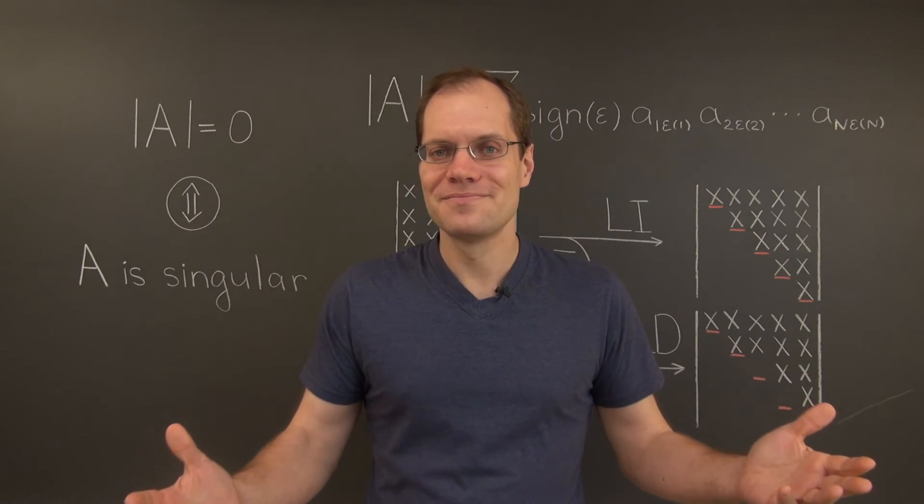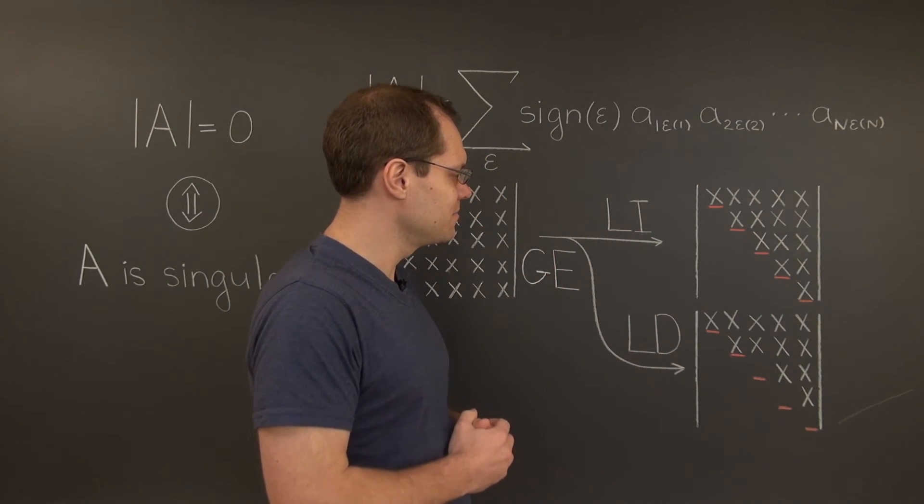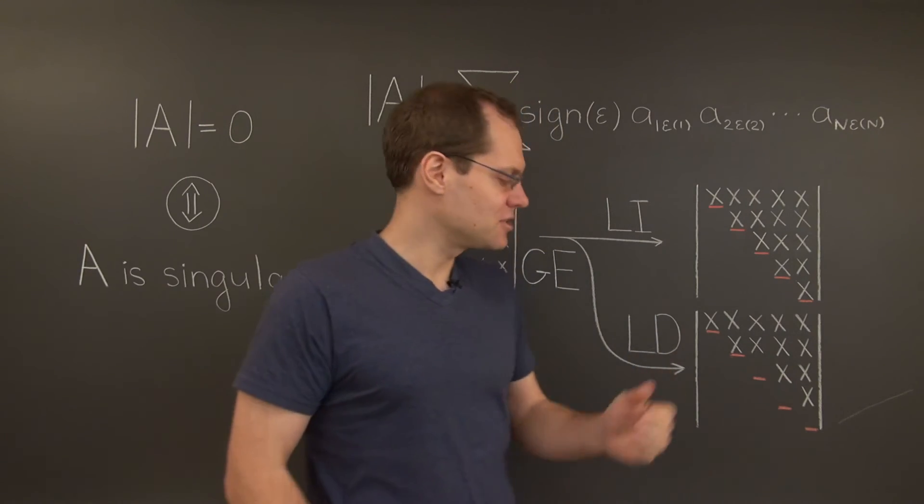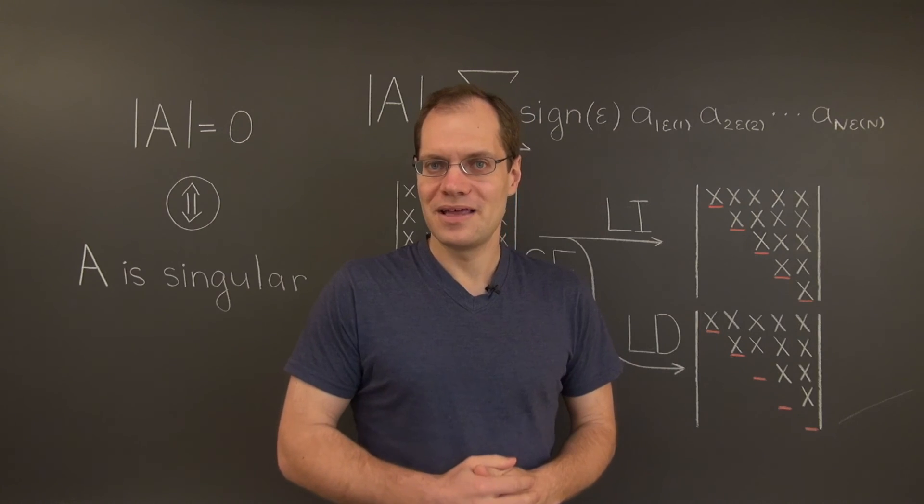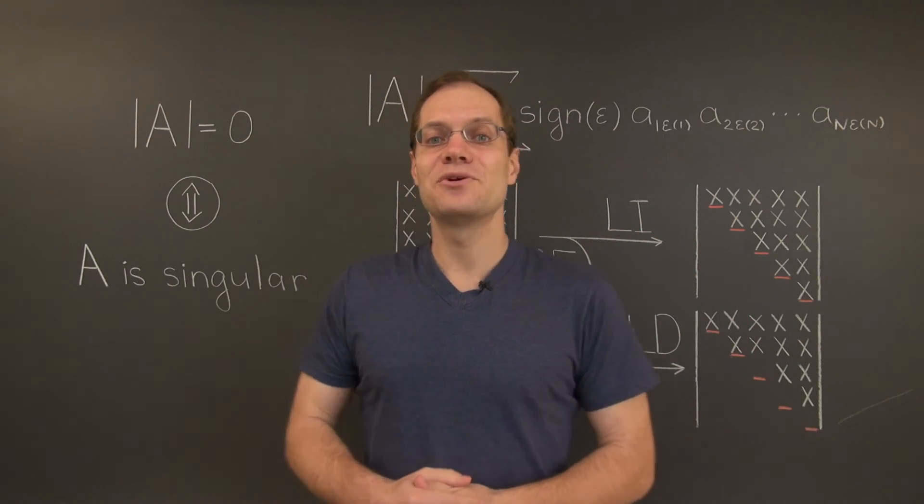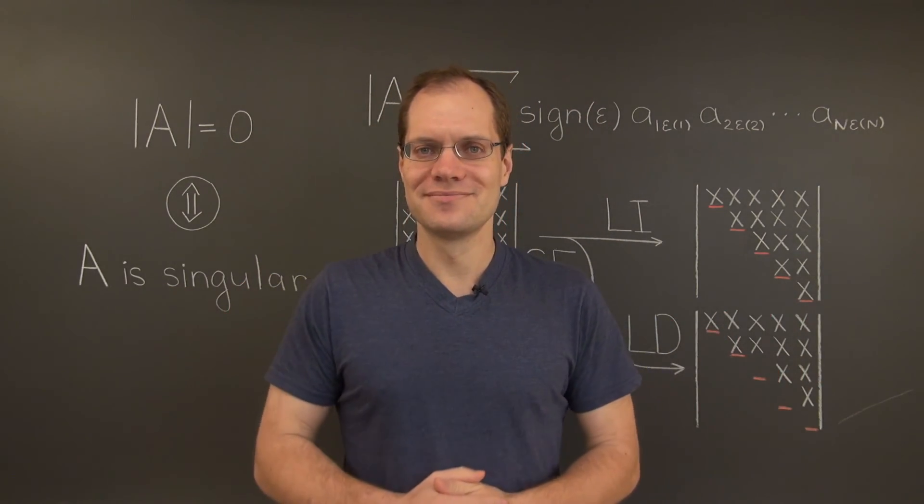To recap, at the end of Gaussian elimination, if the matrix is non-singular, then the determinant is not zero. And if the matrix is singular, then the determinant is zero. And if that's true at the end of Gaussian elimination, then it was also true for the original matrix. And that completes the proof.